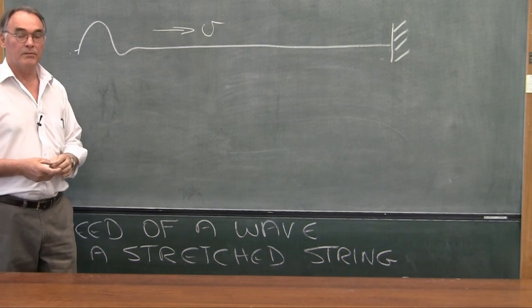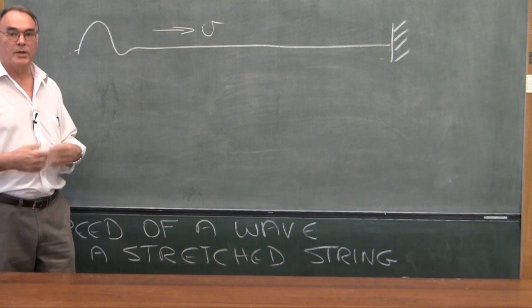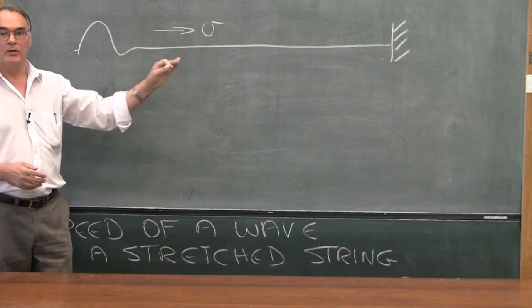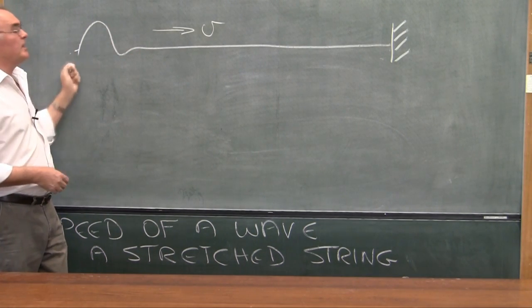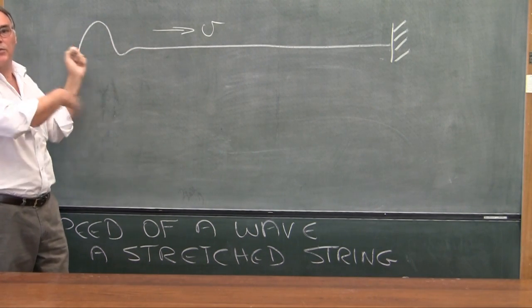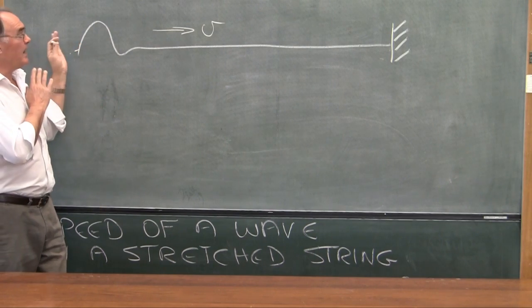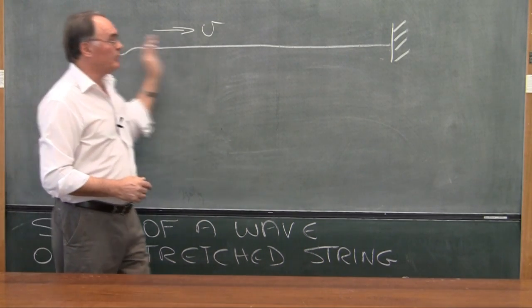We're going to go one step further and put a wave onto the string, not just a single pulse. A wave is just a continuous set of pulses one after the other. What will happen is that the energy in the pulses will move down the string and come back up the string.